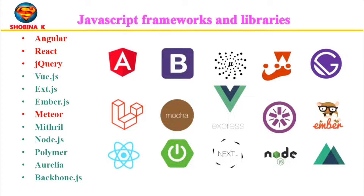One major reason for the popularity of JavaScript is its frameworks. There are around 83 JavaScript frameworks, such as Vue.js, Angular.js, Node.js, React.js, and many more. Each is unique in its own way, and we will see some of the frameworks in detail.